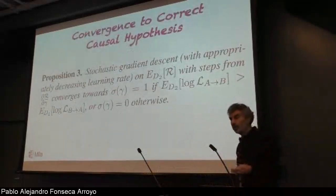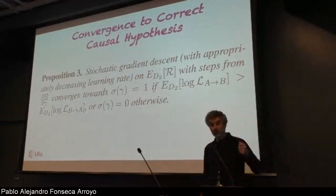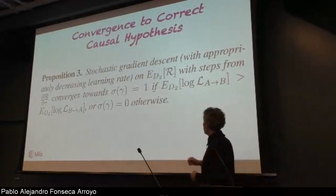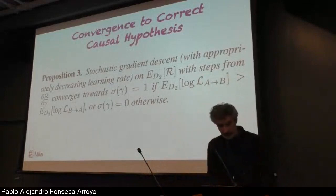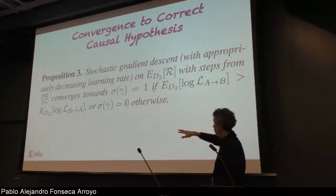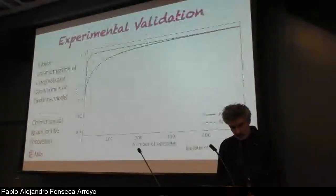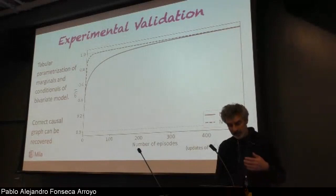There's a more interesting theorem that says if we do stochastic gradient descent on this meta-parameter using this objective, minimizing the expected value of this meta-regret, and if the SGD converges with decreasing learning rates, then we converge to the correct hypothesis. Then we have a bunch of experiments to validate these ideas.